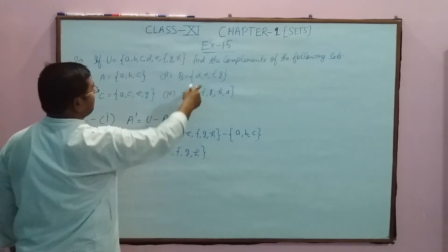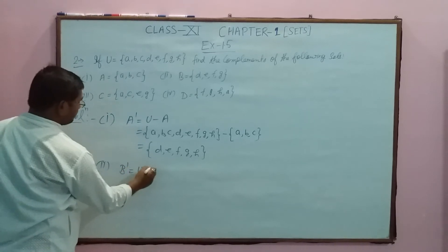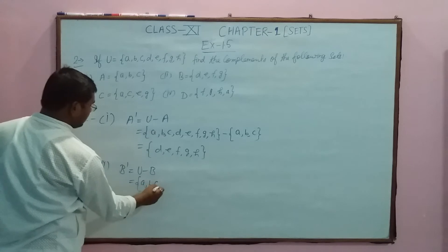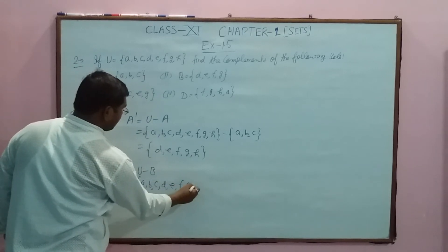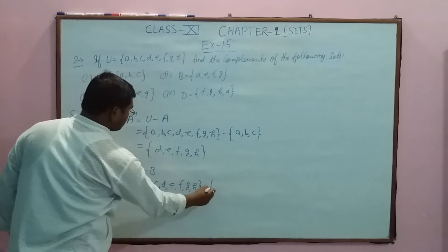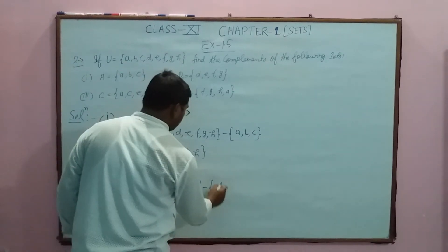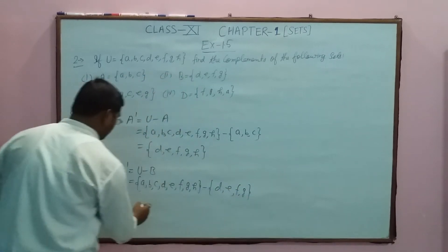Part (b): B complement equals U minus B. U is {a, b, c, d, e, f, g, h} minus B, which is {b, e, f, g}. What is left now?